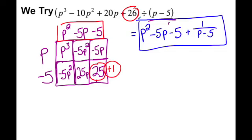The remainder is the number you get — in this case, a number over what you are dividing by, the divisor.